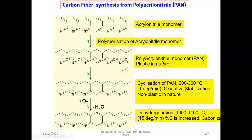This PAN polymer is plastic in nature and flexible because it is linear. When it is subjected to oxidative stabilization at 200 to 300 degrees centigrade with controlled heating at one degree per minute, this plastic PAN transforms into a non-plastic material. This is carried out in the presence of oxygen. During this oxidative stabilization, cyclization takes place — the nitrile (cyanide) groups cyclize, one of the pi bonds breaks and forms a hexagonal ring similar to pyridine. Hence it loses its plastic nature. This is called oxidative stabilization, converting PAN from plastic to non-plastic, and is the first step in the preparation of carbon fiber.